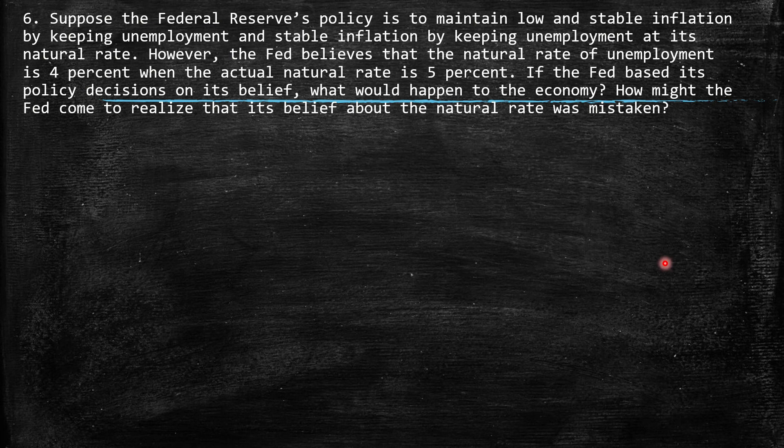Question 6: Suppose the Federal Reserve's policy is to maintain low and stable inflation by keeping unemployment at its natural rate. However, the Fed believes that the natural rate of unemployment is 4%, when the actual natural rate is 5%. If the Fed based its policy decisions on its belief, what would happen to the economy? How might the Fed come to realize that its belief about the natural rate was mistaken?